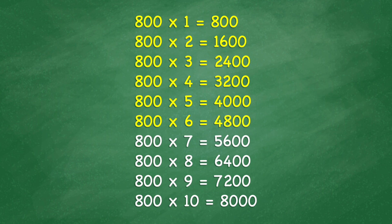800 times 7 equals 5,600. 800 times 8 equals 6,400. 800 times 9 equals 7,200. 800 times 10 equals 8,000.